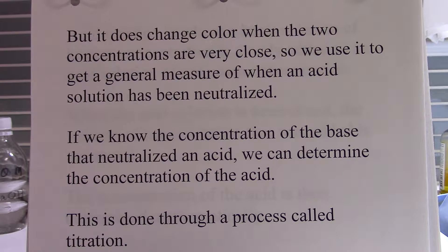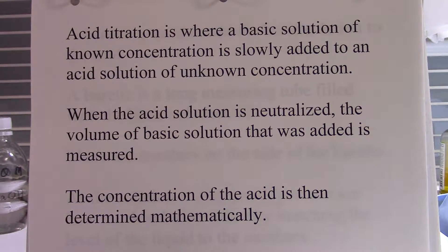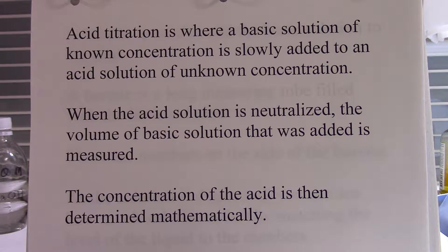If we know the concentration of the base that neutralized an acid, we can determine the concentration of the acid. This is done through a process called titration. Acid titration is where a basic solution of known concentration is slowly added to an acid solution of unknown concentration. When the acid solution is neutralized, the volume of basic solution added is measured, and the concentration of the acid is then determined mathematically.